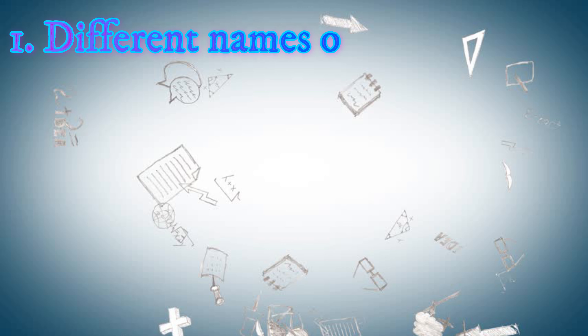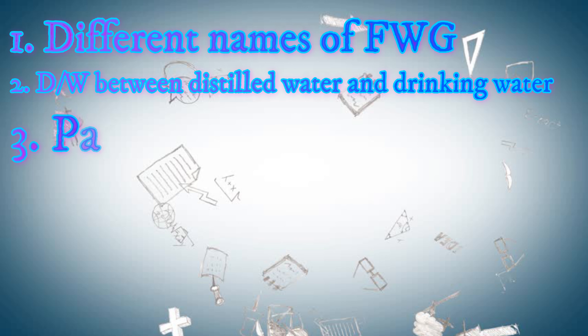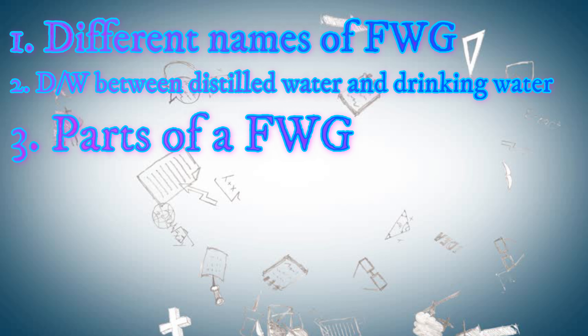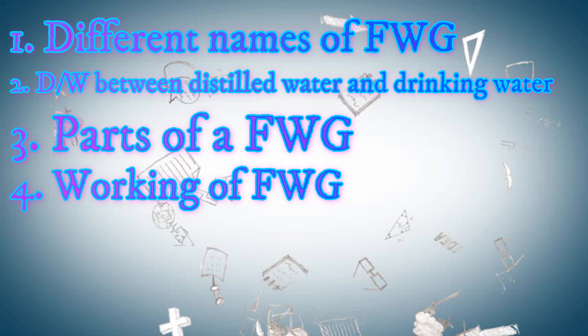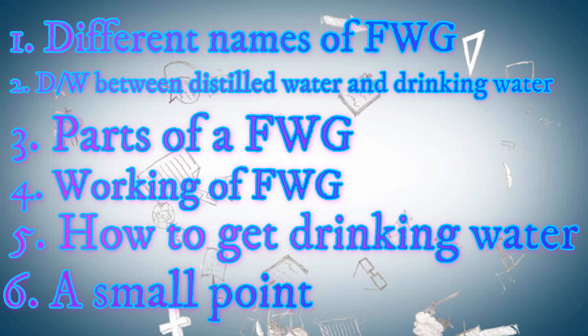My first point is the different names of fresh water generator. My second point is the difference between distillate and drinking water. My third point is the parts of a fresh water generator. The fourth point, which is the most important, is the working of a fresh water generator. The fifth point is how we get drinking water on board a ship, and the sixth is a small additional point.